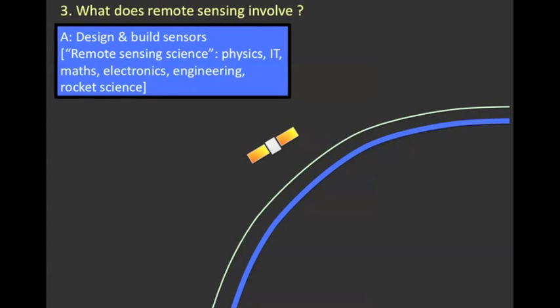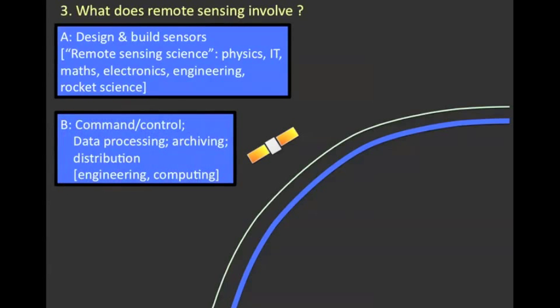So finally, what does remote sensing actually involve? Well, first of all, the sensor needs to be designed, and built, and launched. So that includes physics and maths, it involves some rocket science, and a lot of electronics and engineering. I would call that remote sensing science.